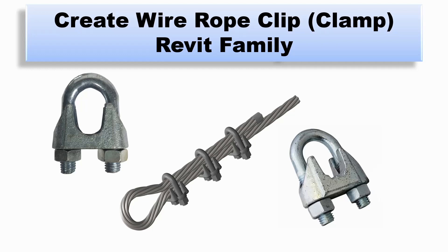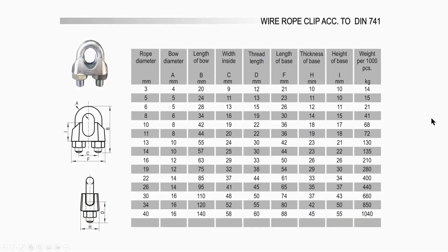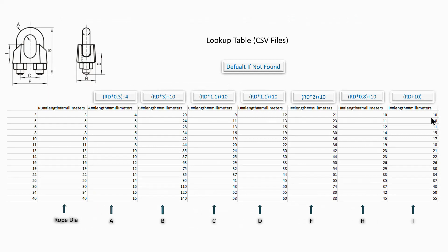In this tutorial, I will use and load in the created nut and thread rod which are parameter controlled by lookup table. You can find and watch how to create nut and thread in the channel. This is the manufacturer specifications. There are 3mm to 40mm rope diameter, and I will refer this data to create a CSV file and to create the parameters.